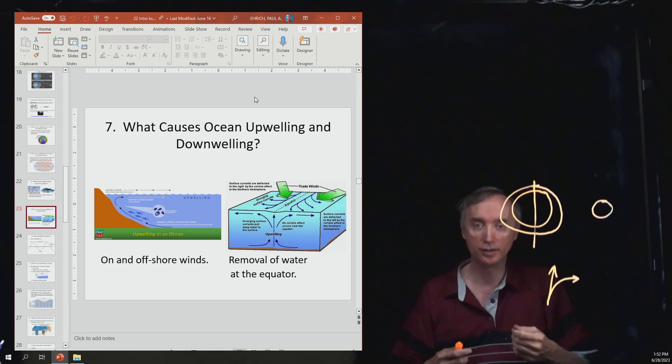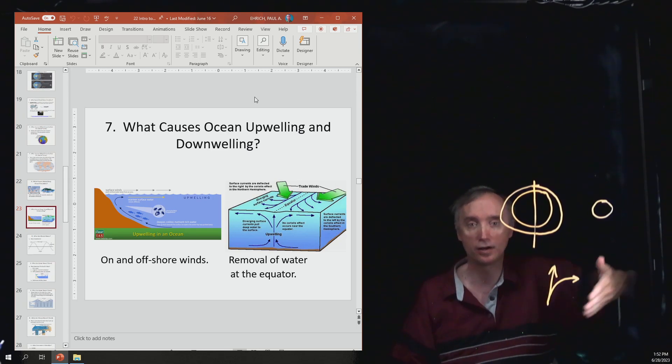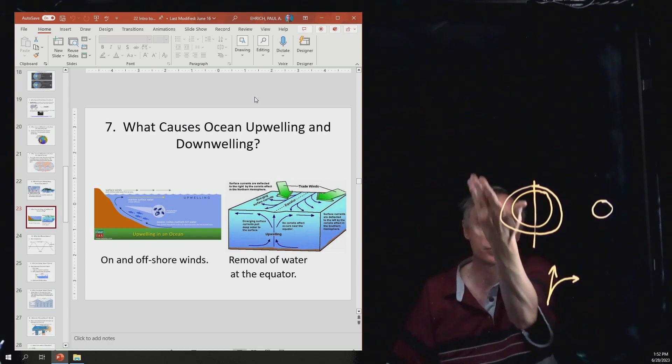So upwelling is a good thing for fish. It can also affect the climate, so that if you've got cold water that's coming up to the surface, well then that's going to cool down the air. So it can affect climate, this ocean upwelling and downwelling.